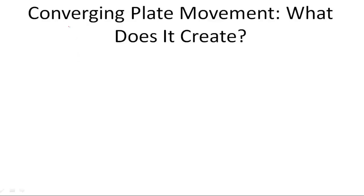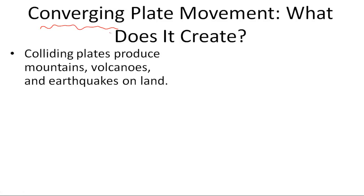One way that plates move is by converging. Converging plates could also be called colliding plates. Colliding plates produce mountains, volcanoes, and earthquakes on land. When these plates collide, they go towards each other, and then often will go up like this, and that's how they can cause mountains and volcanoes.